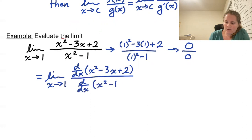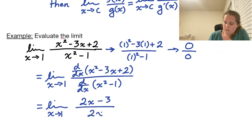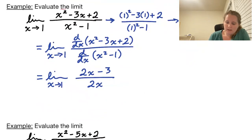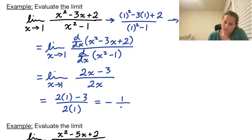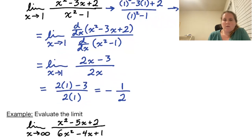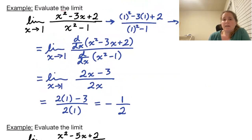We wind up with the limit as x approaches 1 of (2x - 3) over (2x). Plugging in 1 gives us (2·1 - 3) over (2·1), which is -1/2. We previously found this limit by factoring the numerator and denominator and canceling the factor of (x - 1). This is just an alternative way to find our limit.